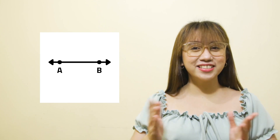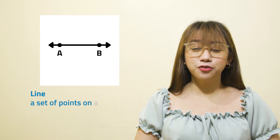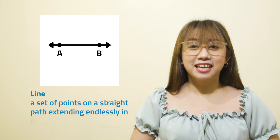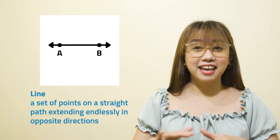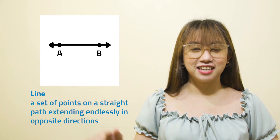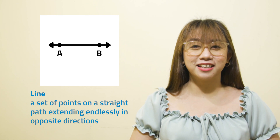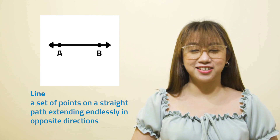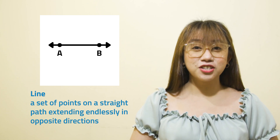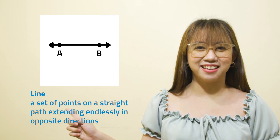How about this? This is a line. A line is a set of points on a straight path extending endlessly in opposite directions. It is named using two distinct points represented by two letters. The illustration is line AB or BA.